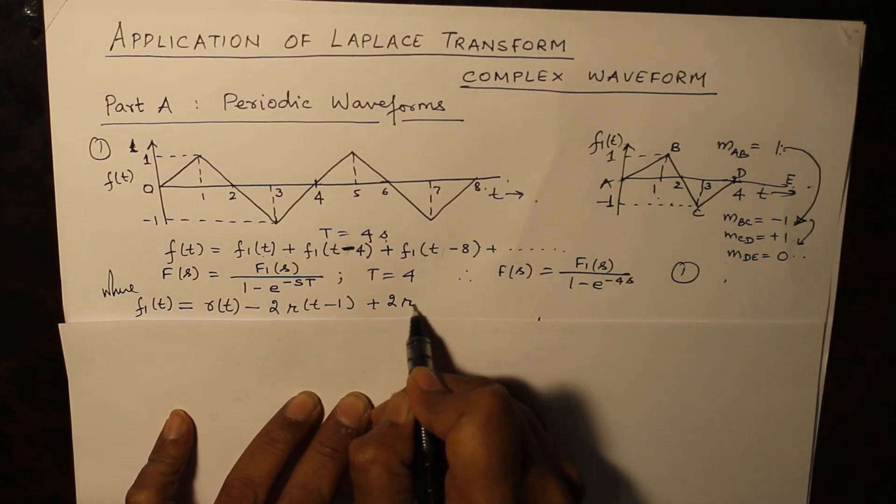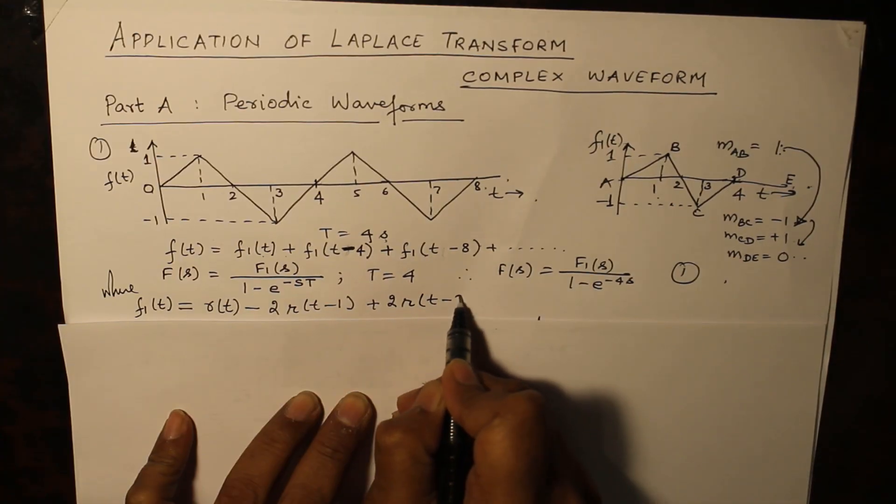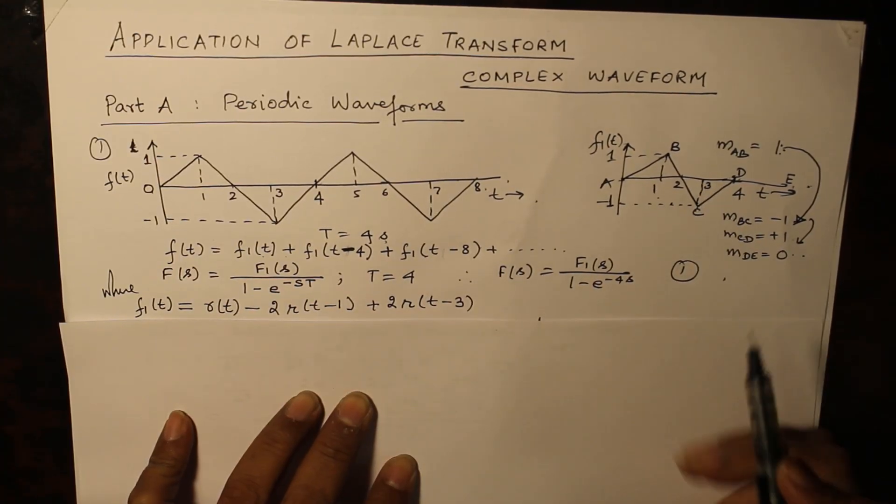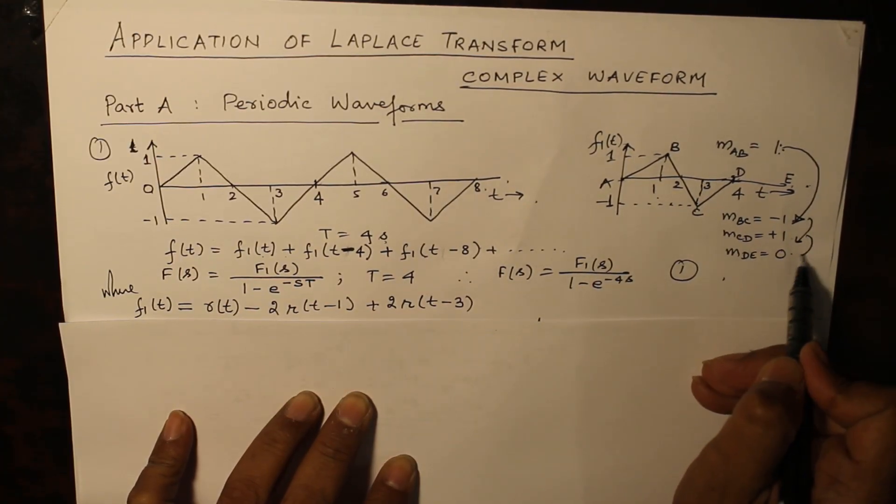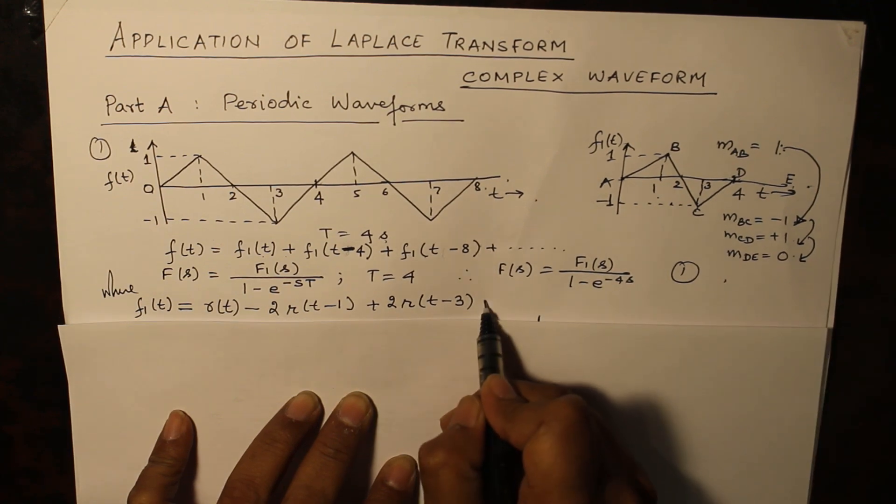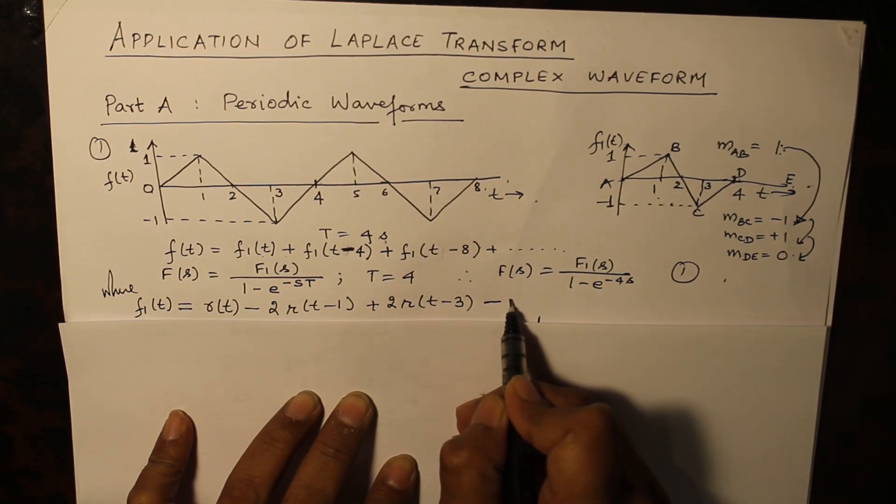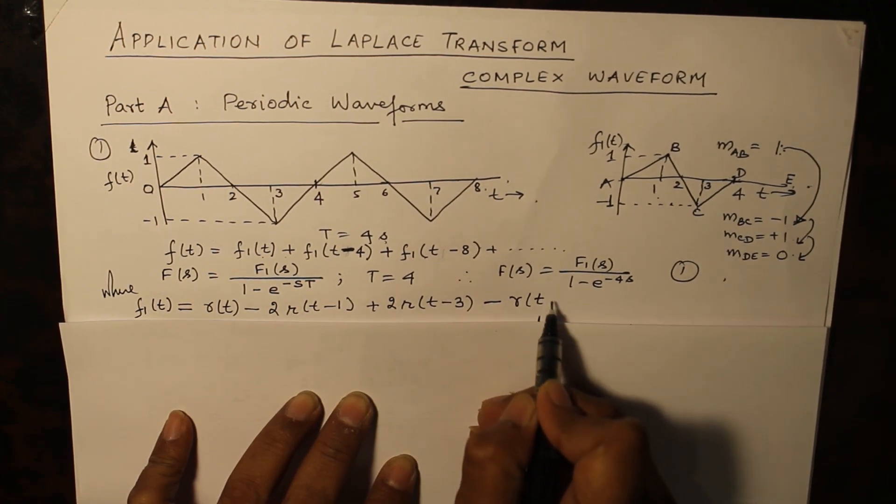The next one is from 1 to 0, so a change of minus 1 at t equals 4. This is f1(t).